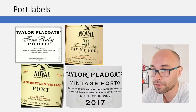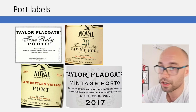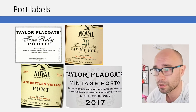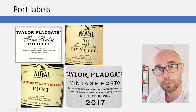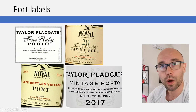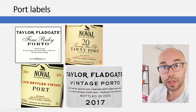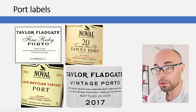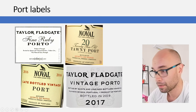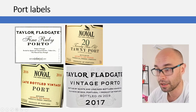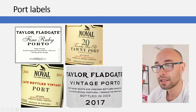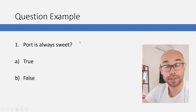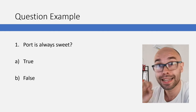Looking at port wine labels: 'Fine ruby' is a simple ruby style port dominated by fruit. Higher quality ruby port will say Late Bottle Vintage (LBV) with a vintage year — for example 2016. The highest quality ruby style says 'Vintage Port' with the vintage year and bottling date — for example vintage 2017, bottled in 2019. Then you also see Tawny port with an indication of age, such as 20 years.